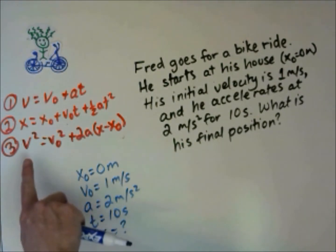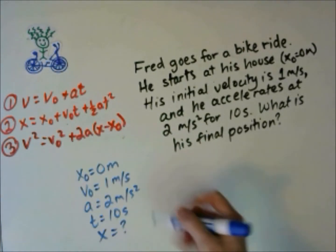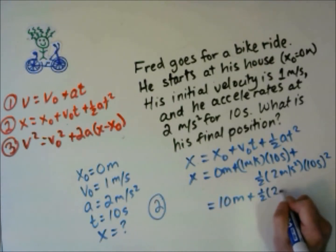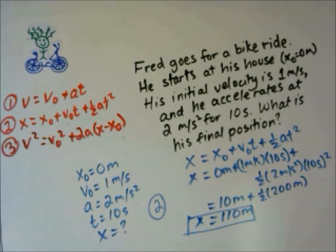It's not going to be the first one because that one has final velocity, which we don't have and we don't need to know. It's not going to be the last one for the same reason. It includes final velocity. It's going to be equation 2. His final position will be 110 meters.